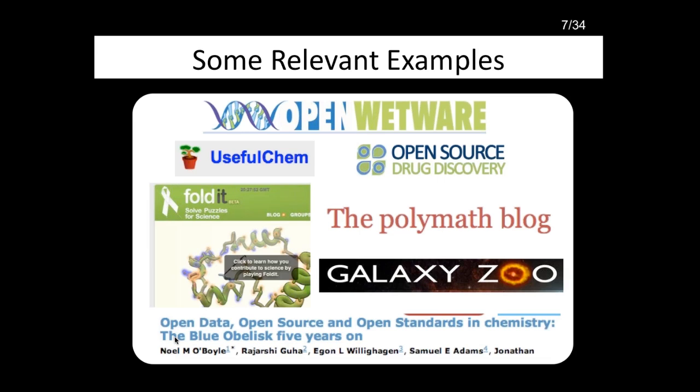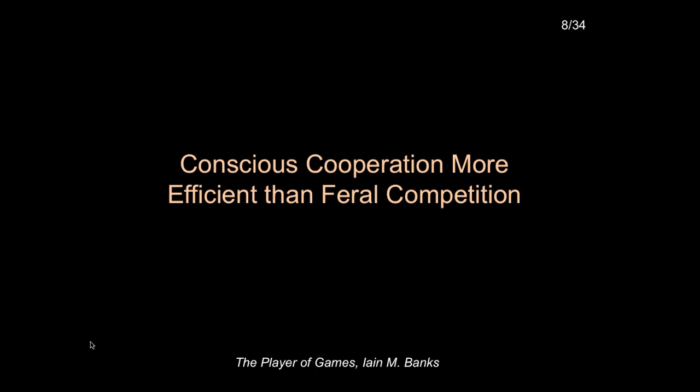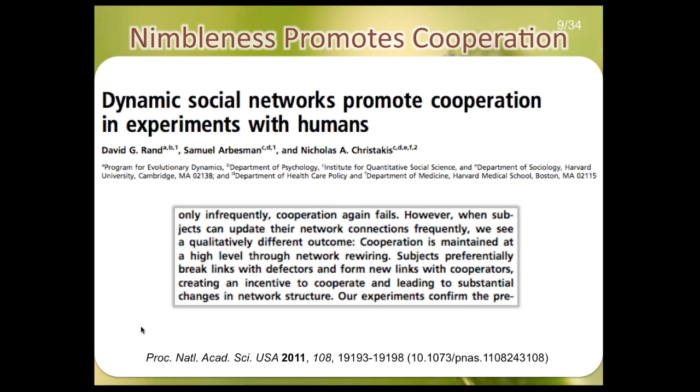There's a range of things from citizen science, where you have participants from the public, to smaller projects where participants are expected to have greater expertise in the underlying science, like the Polymath project. Instead of the usual academic model of working in secret and competing without knowing what each other is doing — that kind of feral competition — you embrace conscious cooperation, where you know what everyone else is doing. It's like the difference between a hundred meter sprint at the Olympics, where everyone is on a level playing field and you can see how fast everyone's going, versus running in a tunnel where you don't see what everyone else is doing.